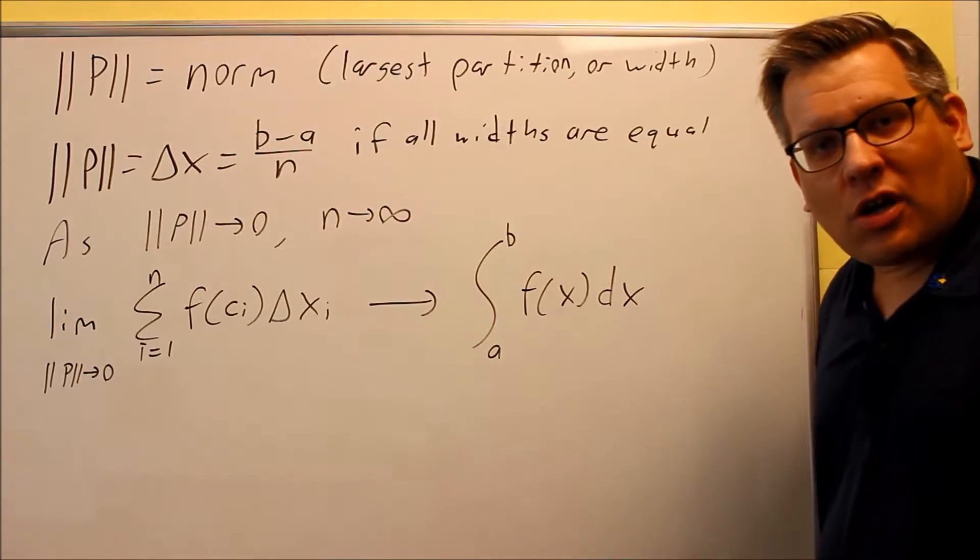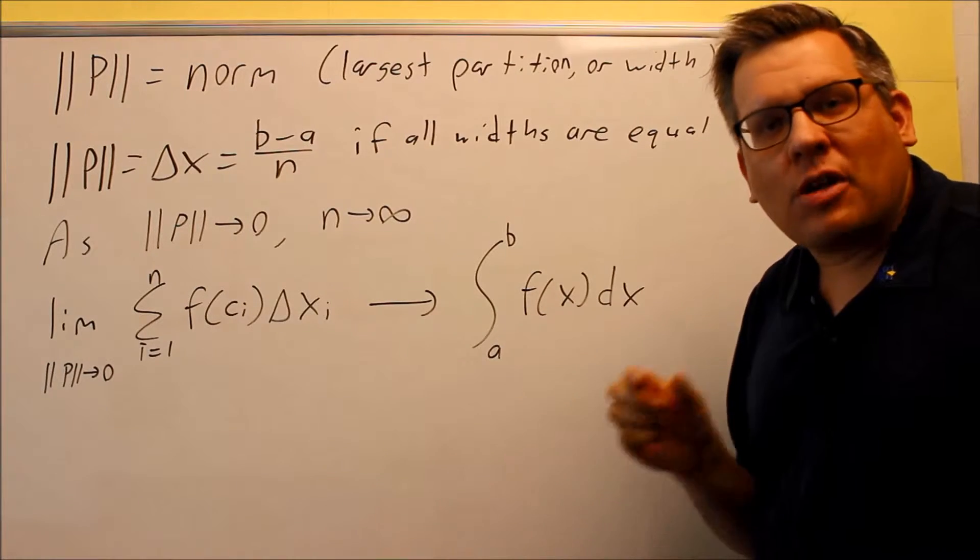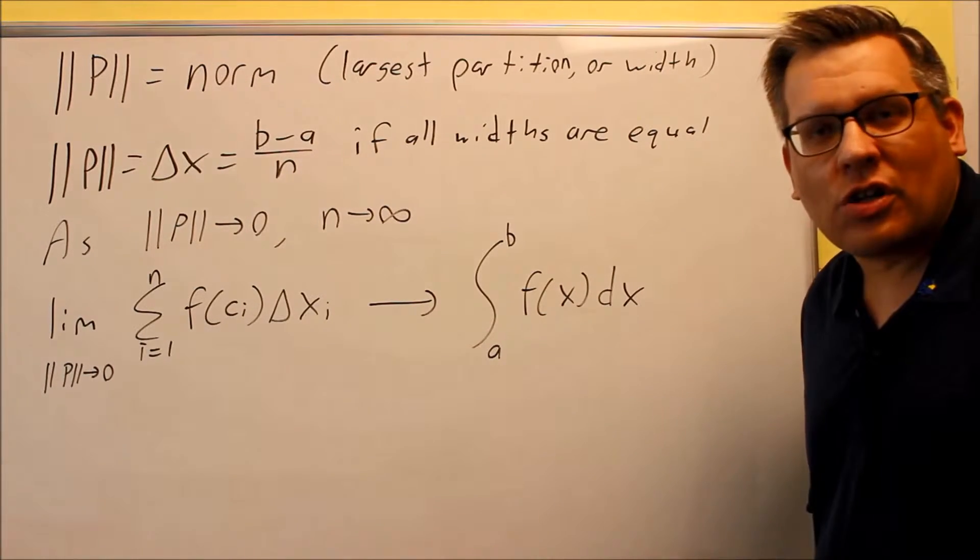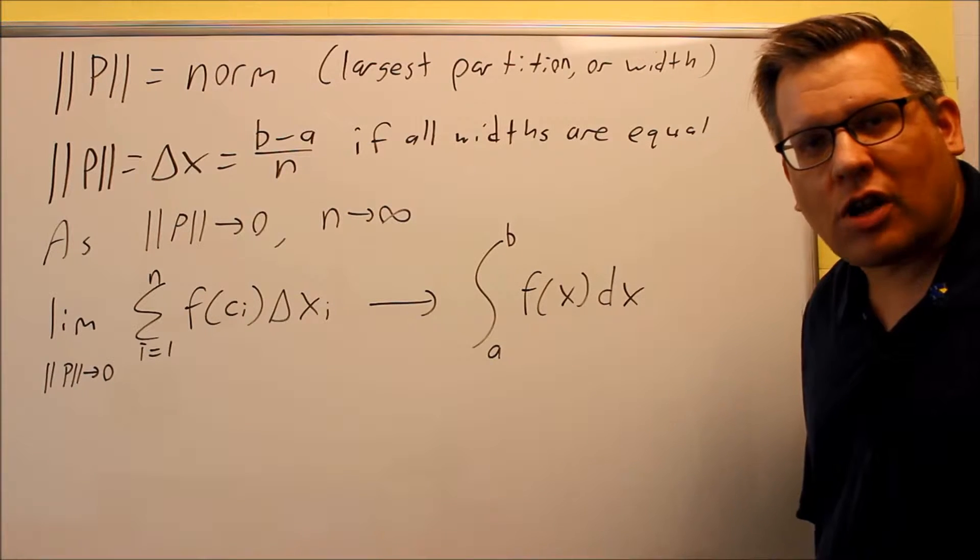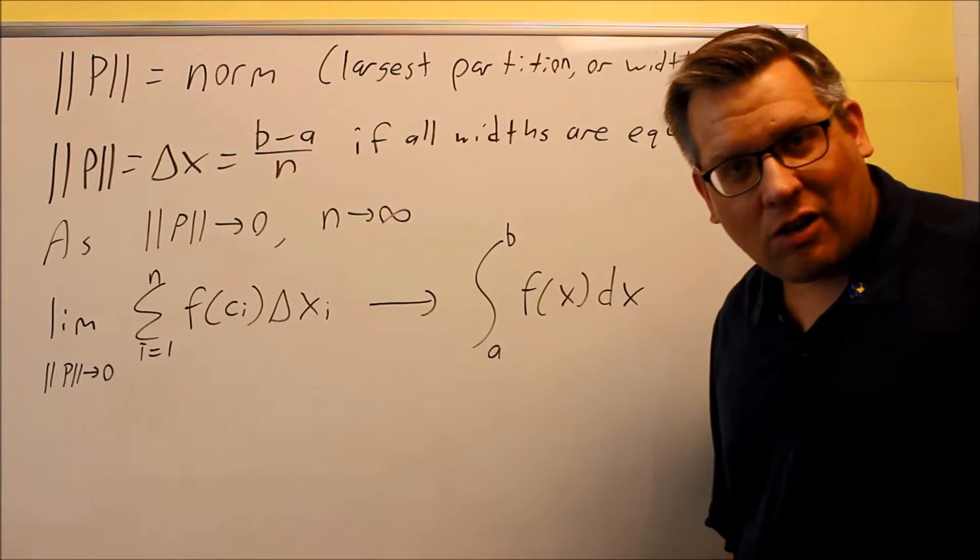Now the reason why we have that is because if you make the widths as small as possible, that means you can fit many different rectangles underneath the curve itself. So ideally you want to try and fit as many rectangles as possible because you want to get the exact area.